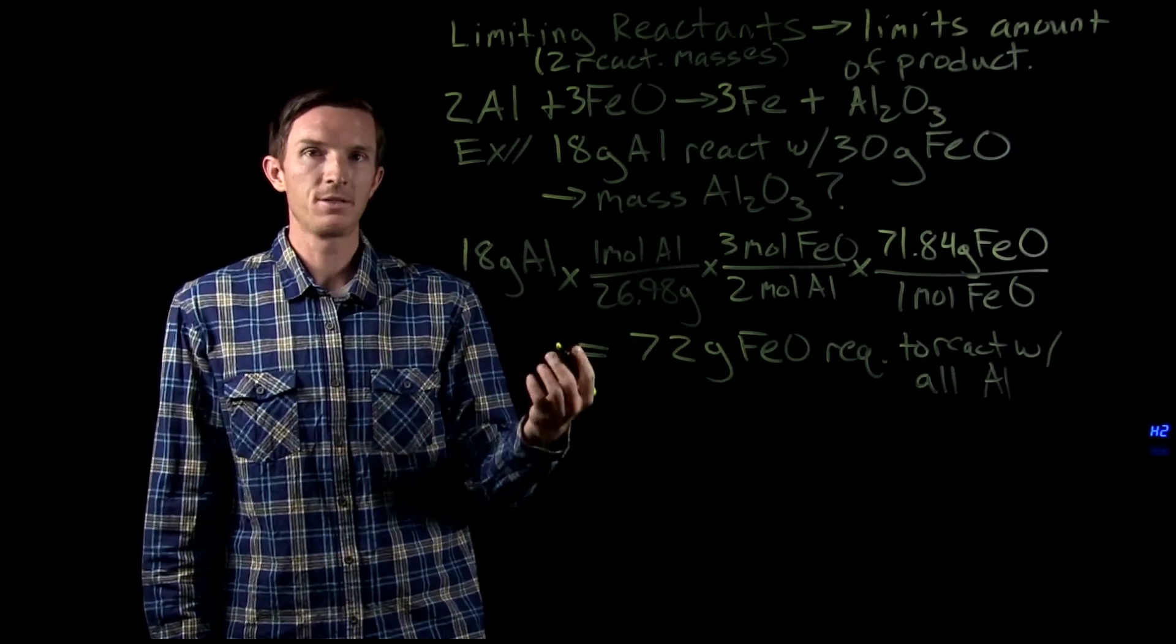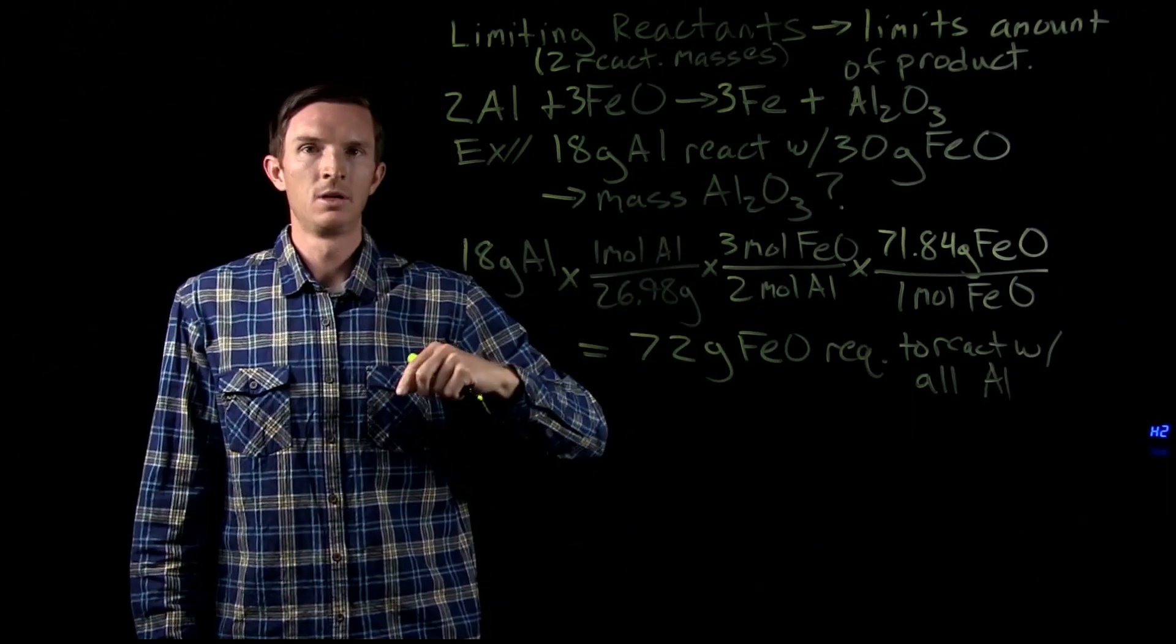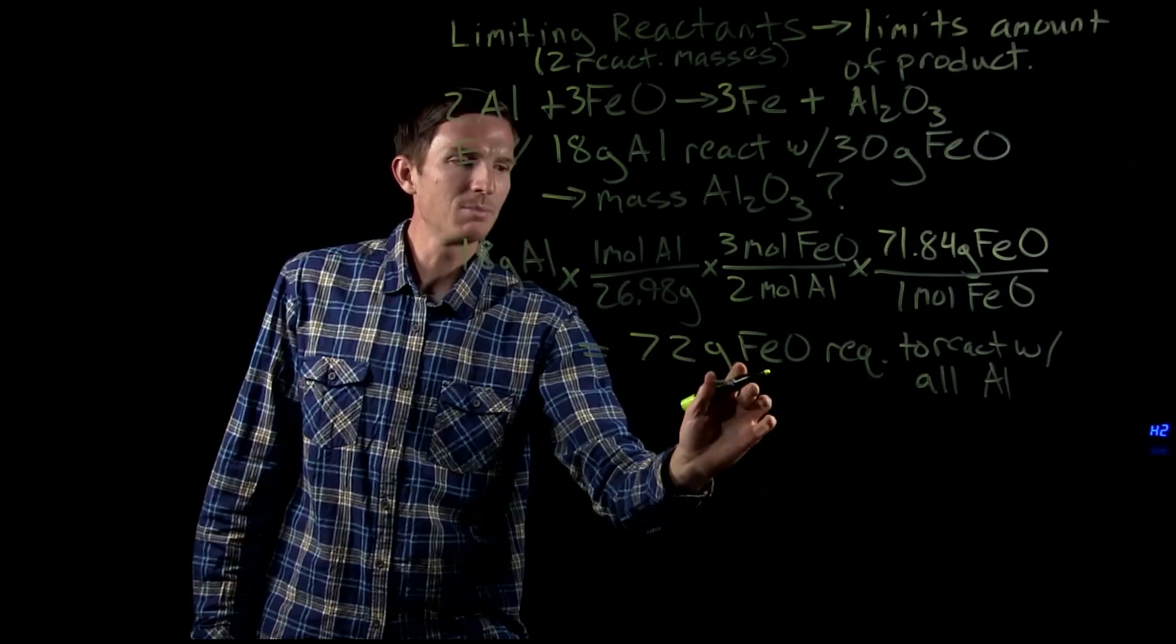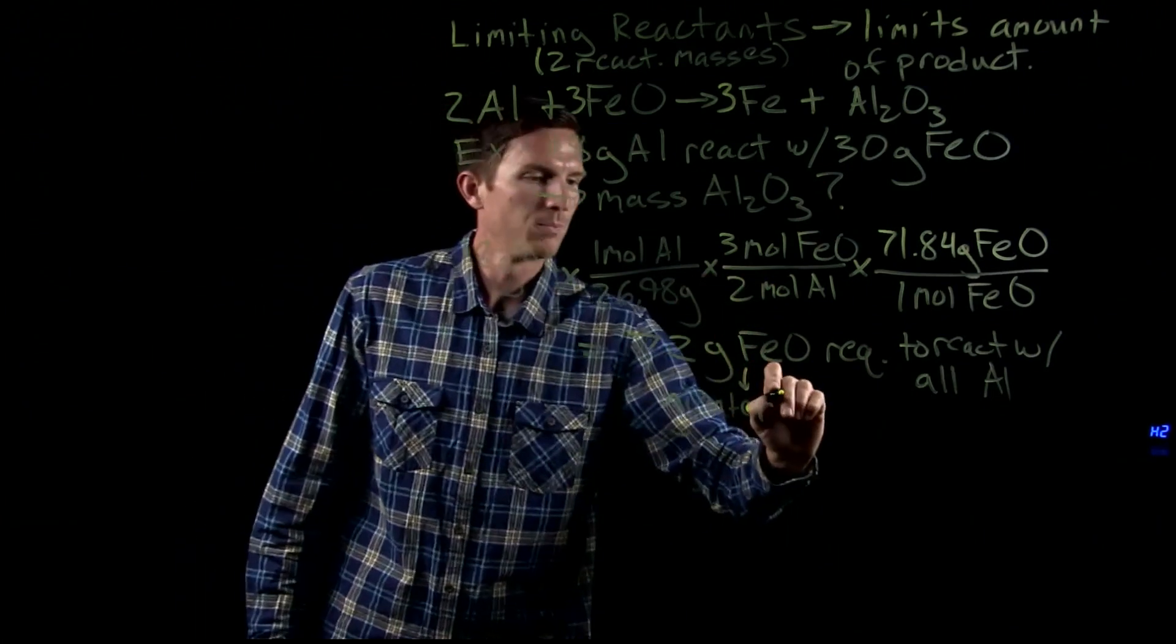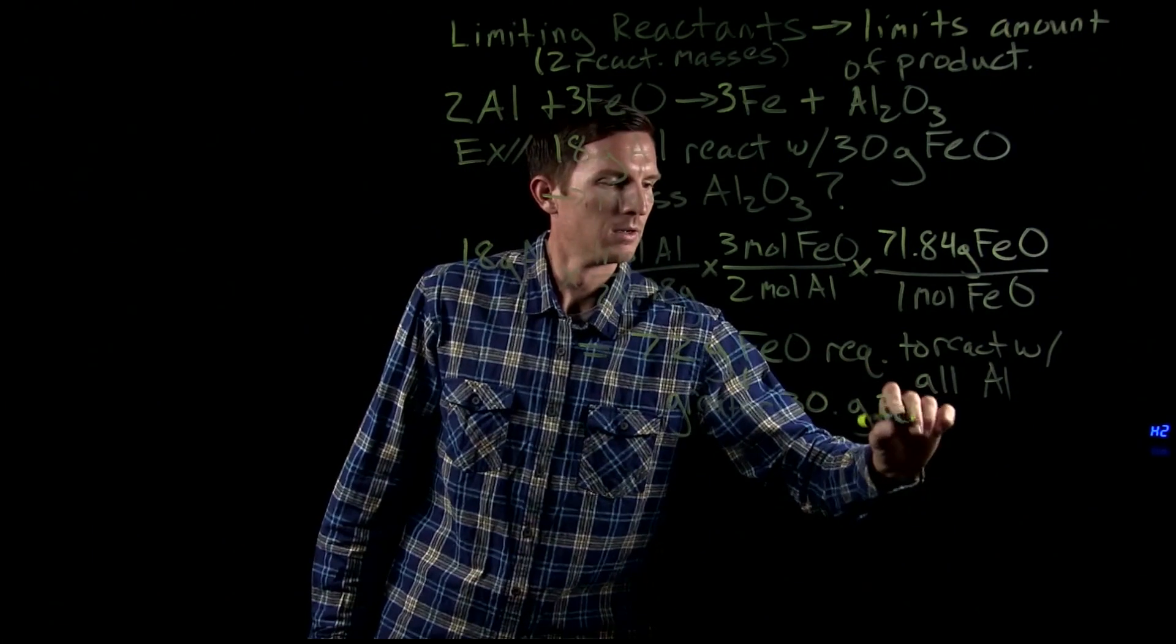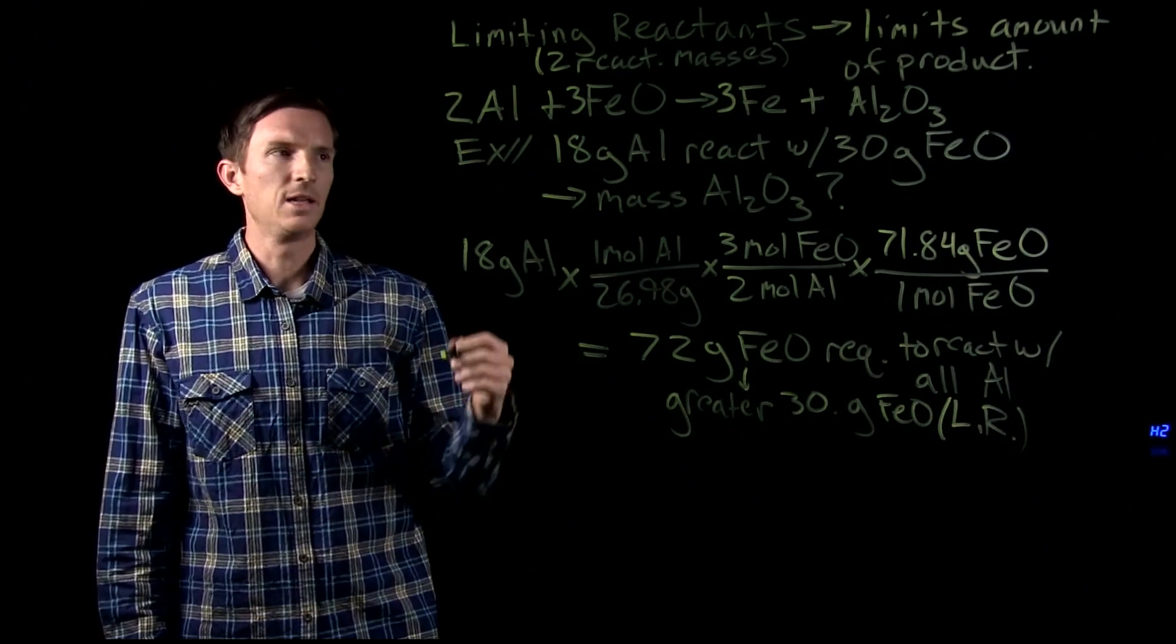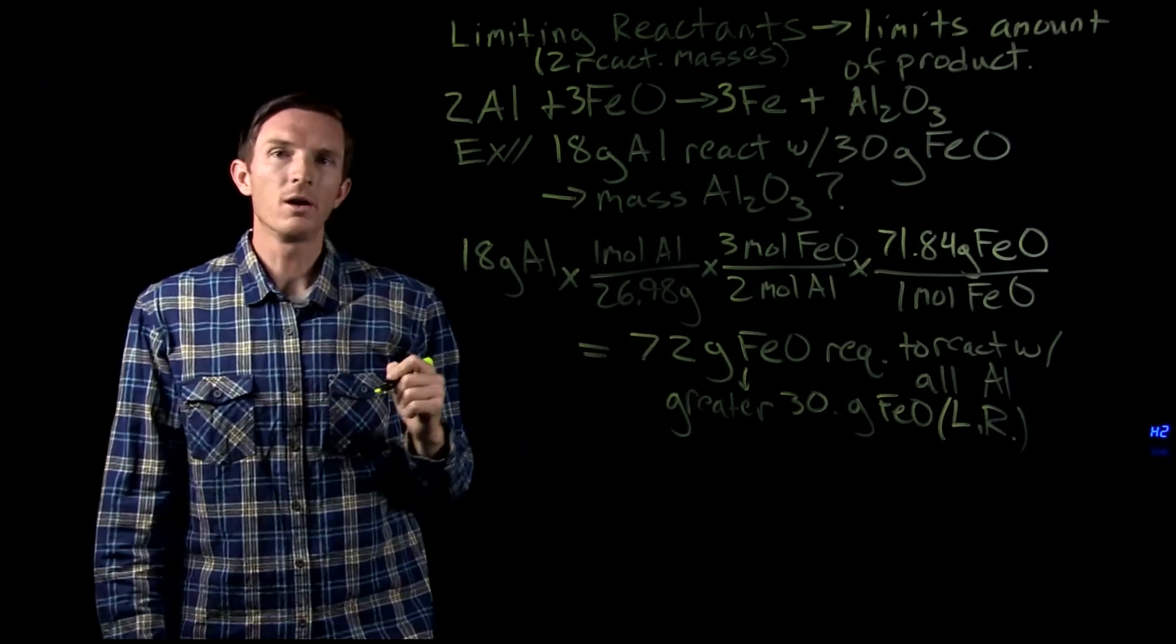So we're going to compare this to what we actually have. We need 72 grams, we only have 30 grams. So we're not going to be able to react all of our aluminum. We're going to run out of iron oxide before our aluminum gets fully reacted. Because this mass here is greater than what we start with, which is our 30 grams of iron oxide, we see that therefore iron oxide is our limiting reactant. It's going to run out first before all of our aluminum is gone, and therefore it's going to limit how much of our product, our aluminum oxide, we get.